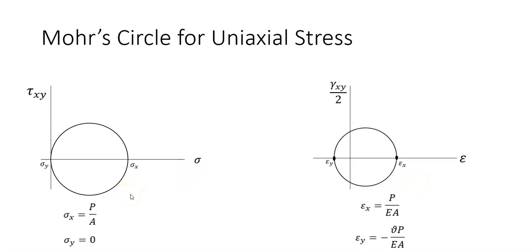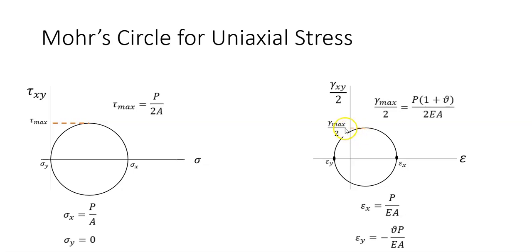In Mohr's circle for stress, you can determine the maximum shear stress. Since normal stress is P over A and this equals the diameter of the circle, the radius of the circle — which is the maximum shear stress — is P over A divided by 2. Similarly, in Mohr's circle for strain, you can calculate the maximum shear strain using these equations, knowing that the radius of the circle equals maximum shear strain divided by 2. From this equation and using the relation between shear strain and shear stress, we can derive the relationship between the modulus of rigidity G and the modulus of elasticity E.